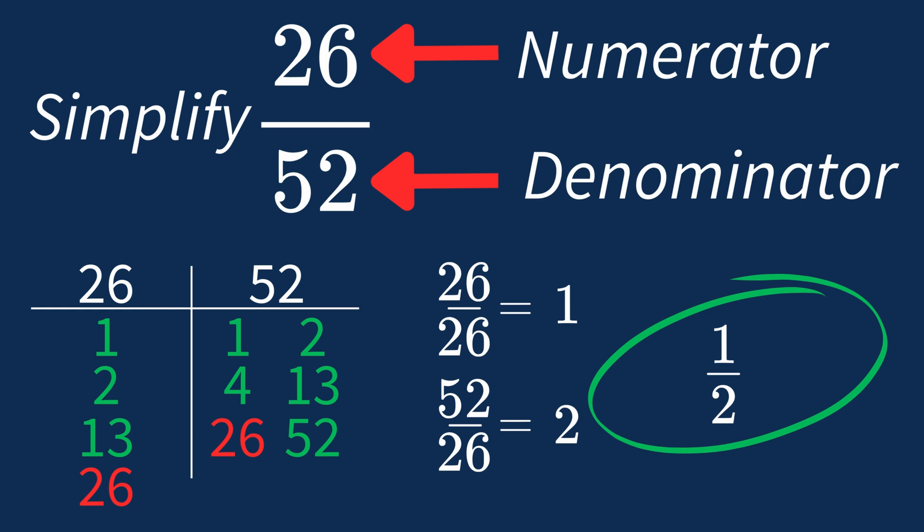And we know that 1 over 2 is in its simplest form, because the only common factor between 1 and 2 is 1. And when 1 is the largest common factor, we know that our fraction has been simplified.